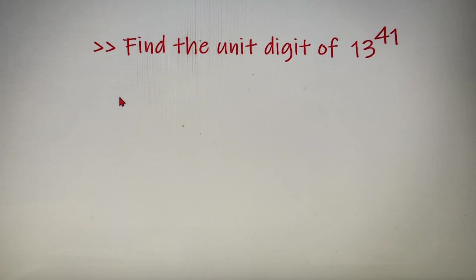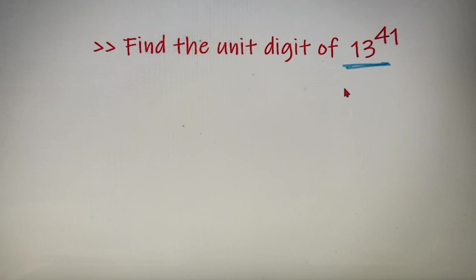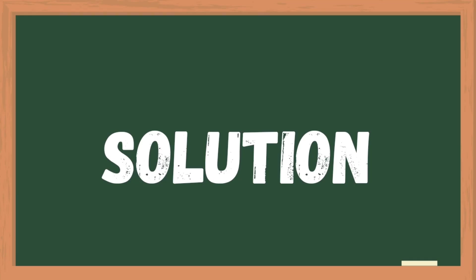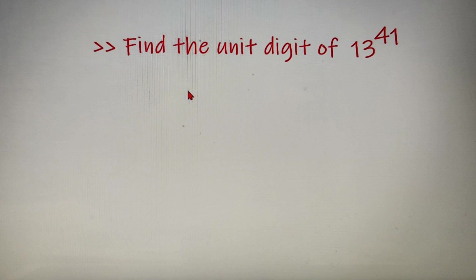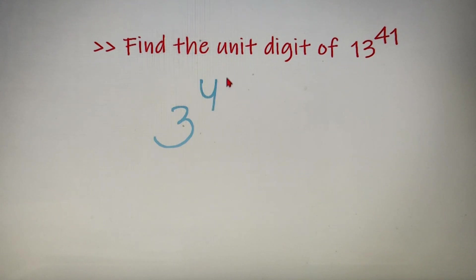For our first question, we have to find out the unit digit of 13 raised to the power 41. I would like you to try to solve this question by yourself and then come back for the solution. So we have to find out the unit digit of 13 raised to the power 41, which means we basically have to find out the unit digit of 3 raised to the power 41.